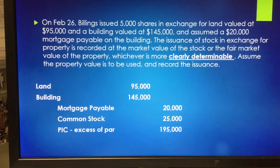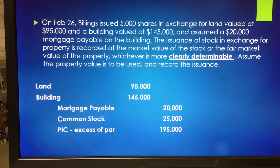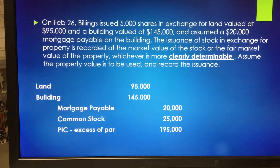On February 26th, Billings issued 5,000 shares in exchange for land valued at $95,000, a building valued at $145,000, and Billings assumed a $20,000 mortgage payable on the building. The issuance of stock in exchange for property is recorded at the market value of the stock or the fair market value of the property, whichever is more clearly determinable. When cash is involved, it's pretty clear what the value of the stock would be.